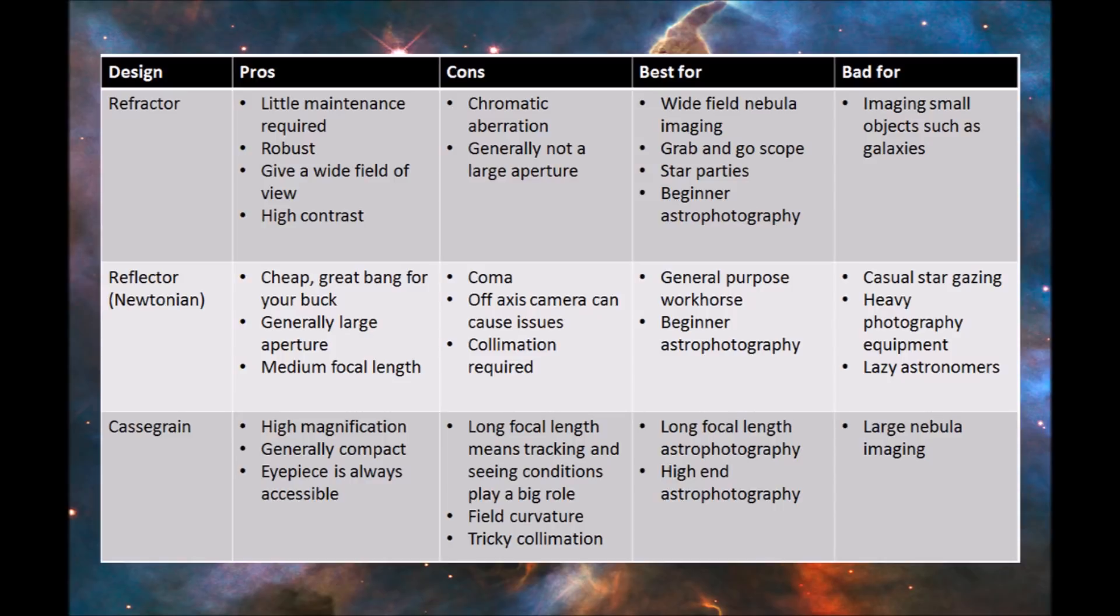So, refractors. Refractors are fantastic beginner telescopes and even advanced telescopes. They require very little maintenance. They're ready to observe when you are. They also tend to have a short focal length, which means that they have a very wide field of view, which is sometimes good for looking at nebulas and some of the larger objects in the sky. And because of the design and the lack of a central obstruction that you get with the reflector telescopes, they actually generate very high contrast images.